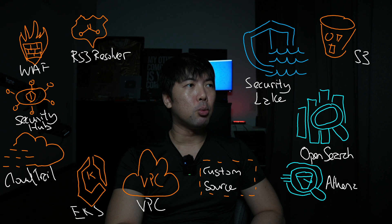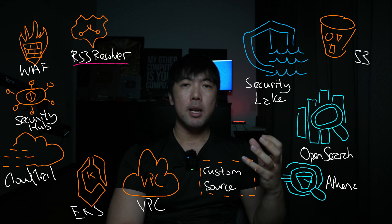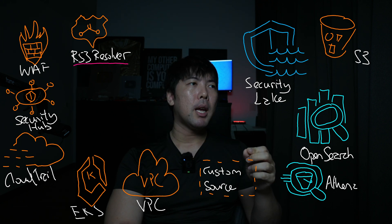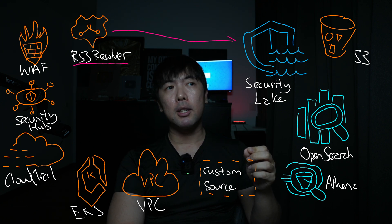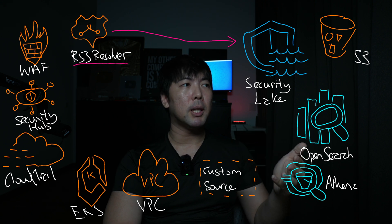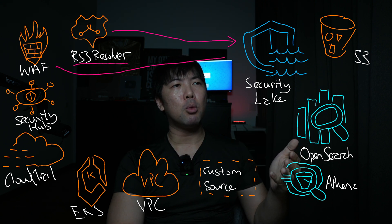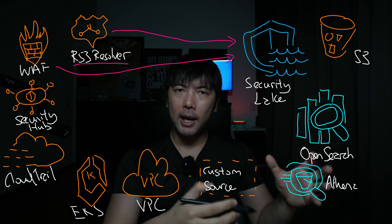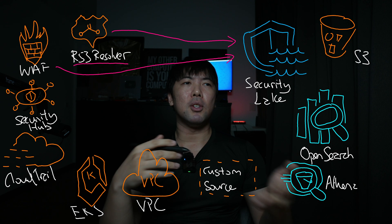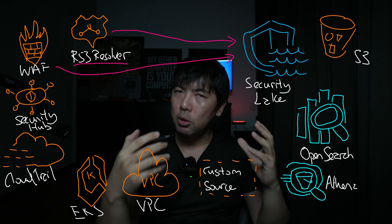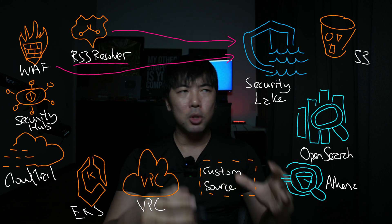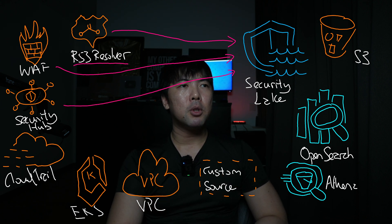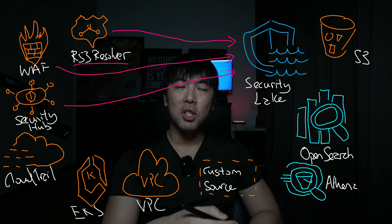Now we begin with data sources. First, you have Route 53 Resolver — when an internal workload does a DNS query, that can be made available to Security Lake. We also have AWS Web Application Firewall, one of my favorite services, typically used for protecting internet-facing applications. If there's a DDoS attack or someone is trying to do SQL injection or cross-site scripting, you can likewise make that available through Security Lake.